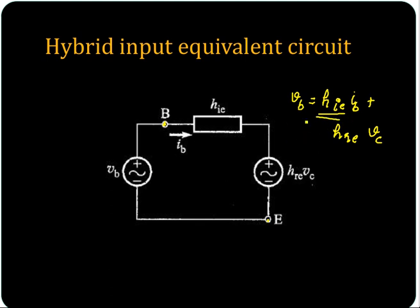So it is equal to HIE times IB — representing this by an impedance HIE. Plus you have another voltage, that is HRE times VC.